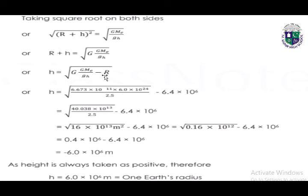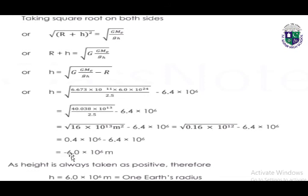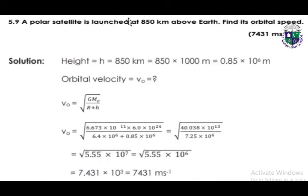By putting the values of G, Me, gh, and R into the rearranged formula, we calculate the answer: −6.0 × 10⁶ meters. Since height is always positive, we ignore the negative sign. Therefore, h = 6.0 × 10⁶ meters, which equals one Earth's radius.